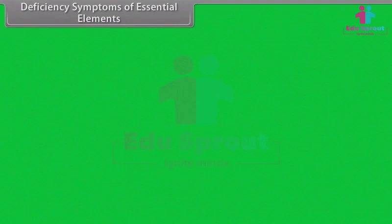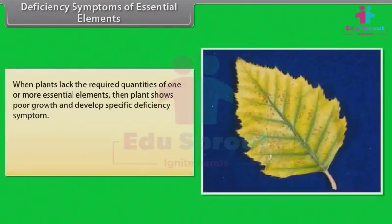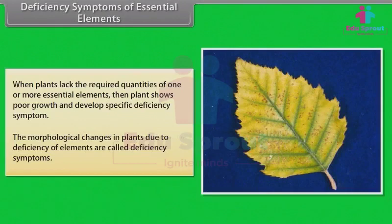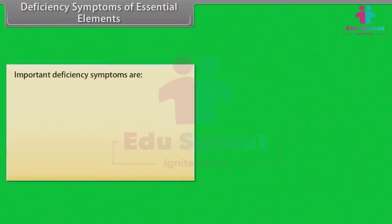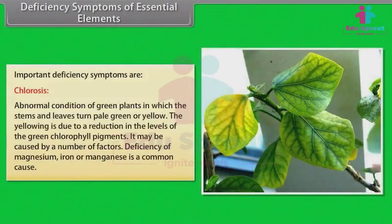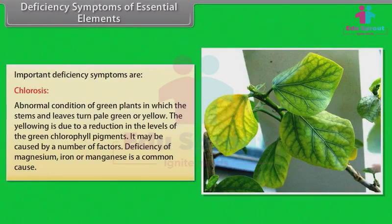When plants lack the required quantities of one or more essential elements, they show poor growth and develop specific deficiency symptoms. The morphological changes in plants due to deficiency of elements are called deficiency symptoms. An important deficiency symptom is chlorosis — an abnormal condition of green plants in which stems and leaves turn pale green or yellow. The yellowing is due to a reduction in the levels of green chlorophyll pigments. It may be caused by deficiency of magnesium, iron, or manganese.